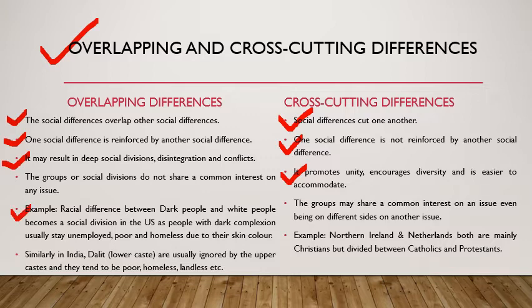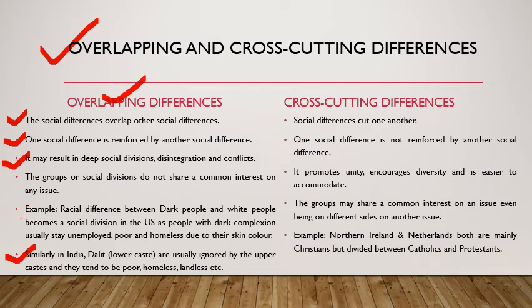An example of overlapping difference: the racial difference between dark-skinned and white people becomes a social division in the US, as people with dark complexions are usually unemployed and homeless due to their skin color. An example of cross-cutting difference: groups may share a common interest on an issue even while being on different sides on another. For example, Northern Ireland and the Netherlands are both mainly Christian but divided between Catholics and Protestants. Similarly in India, Dalits are usually ignored by the upper caste and confined to being poor, homeless, and landless.